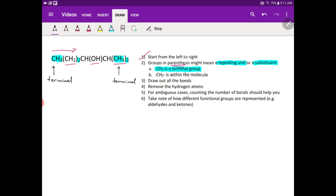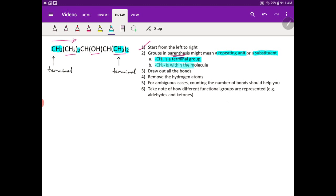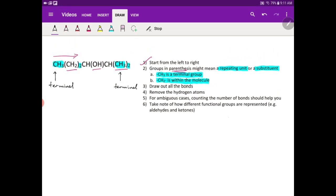Then the next thing that we need to look at is this CH2, and we know that CH2 should be within the molecule. So what we need to do next is really to draw out all the bonds, which is what we are going to do now. We are going to connect the main chain first before drawing out all the bonds. So let's identify what the main chain is.